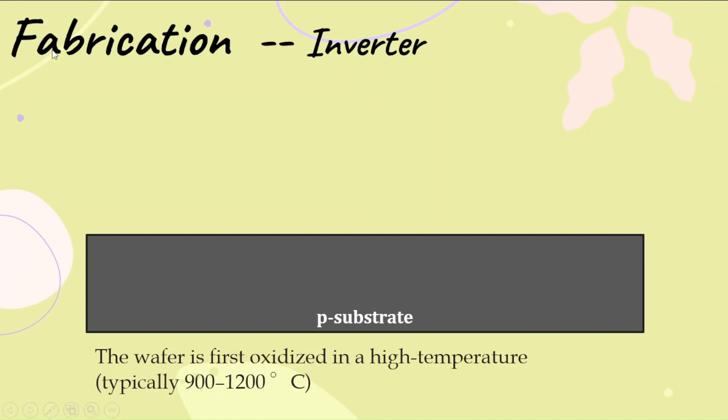In the process of fabrication, we are considering how to fabricate a CMOS inverter. In a CMOS inverter, you will have a p-substrate upon which the other layers are fabricated. This wafer is initially oxidized at the highest temperature, around 900 to 1200 degrees centigrade.